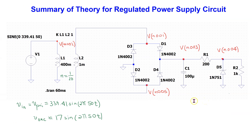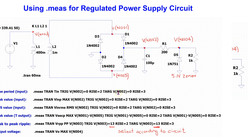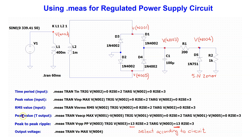We are now ready to consider a regulated power supply circuit as shown. The node voltages are marked. The turns ratio is 1 over 20 and we are using a 5.1 volt Zener. Thus, the output voltage at node N004 is expected to be 5.1 volt constant DC. The construction of this circuit from first principles is discussed in another video in this channel. The measure directives to measure the peak, RMS, and time period of the input voltage, the peak value of the transformer secondary output voltage, the peak-to-peak ripple voltage, and the output voltage are shown here.